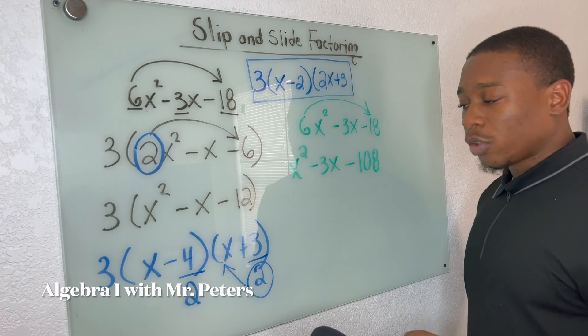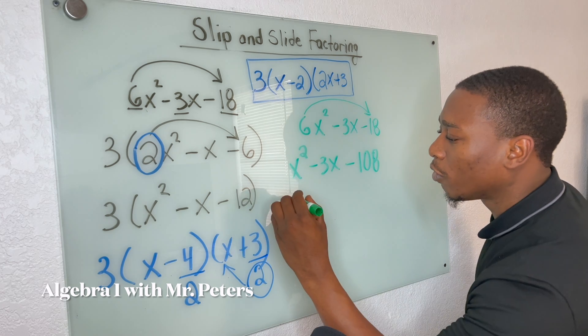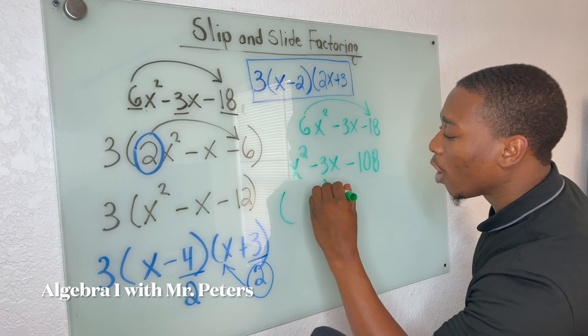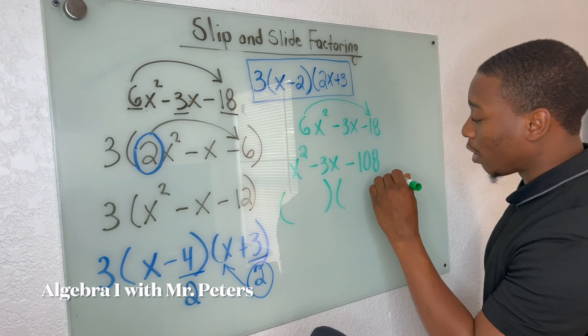So I will have what you see on the board here. OK. So now we're just trying to break this down. We're looking for the two factors that are going to multiply to give us 108. And when we add, it's going to give us a negative three.